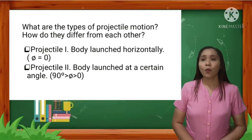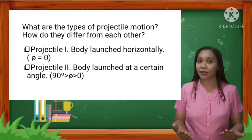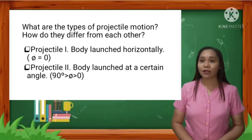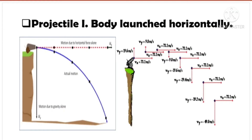What are the two types of projectile motion? How do they differ from each other? Projectile 1: body launched horizontally. Projectile 2: body launched at a certain angle. A projectile launched horizontally has no initial vertical velocity. Its vertical motion is identical to that of a dropped object. The downward velocity increases uniformly due to gravity, as shown by the vector arrows of increasing lengths. The horizontal velocity is uniform, as shown by the identical horizontal vector arrows.